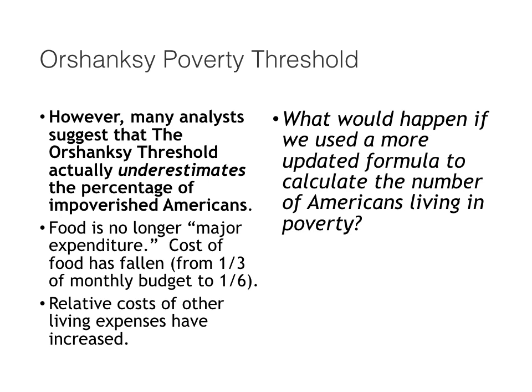That's why many analysts suggest that the Orshansky threshold underestimates the percentage of impoverished Americans now. Back in the 1960s, it worked just fine. But food is now no longer the major expenditure for most households. The cost of food has fallen from about one-third of the average family's monthly budget to closer to one-sixth, or even one-eighth, while relative costs of other living expenses have increased. For most households, housing is now the most expensive monthly cost. What would happen if we indexed the poverty level to the average cost of housing instead of the average cost of food?